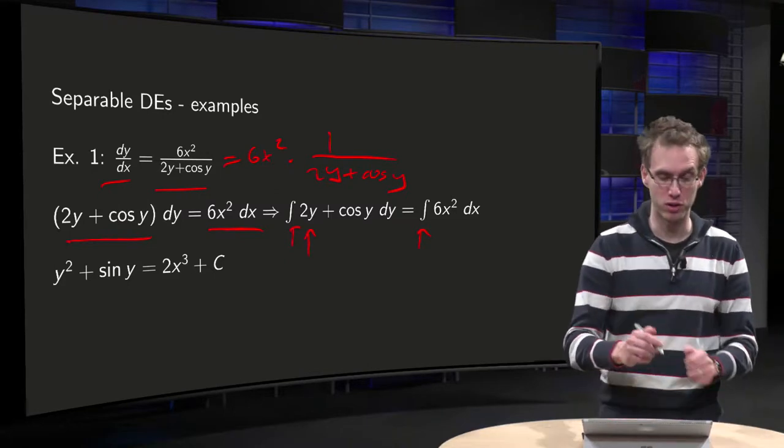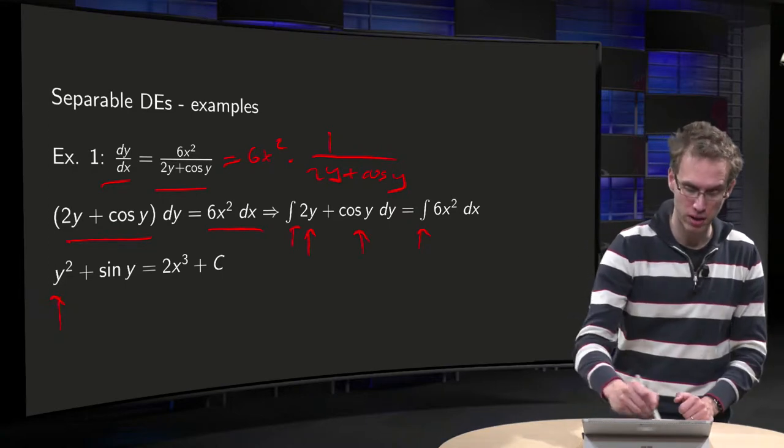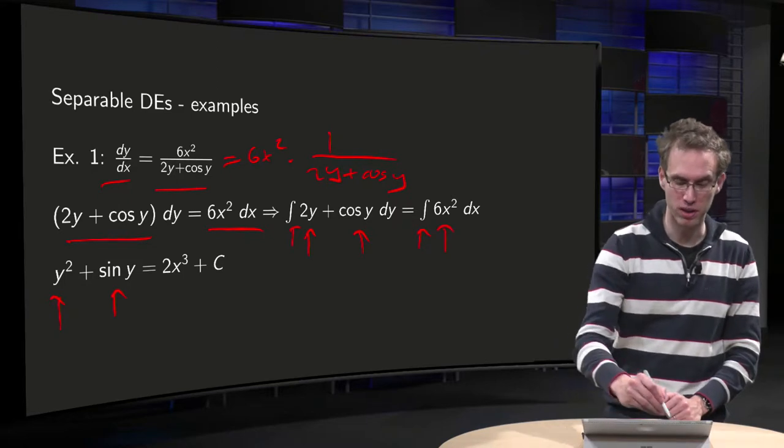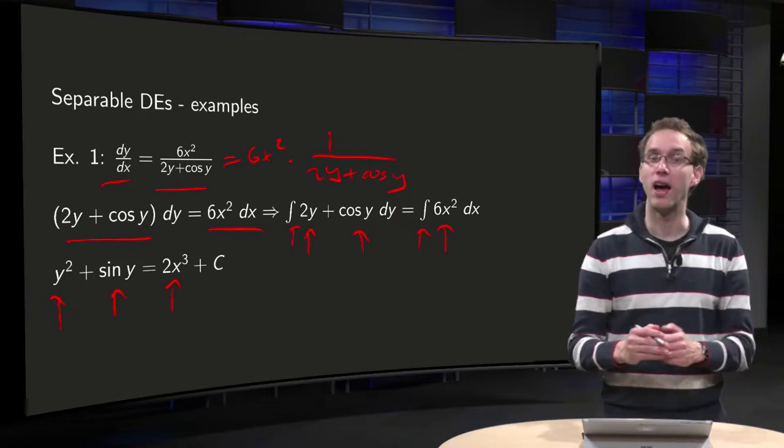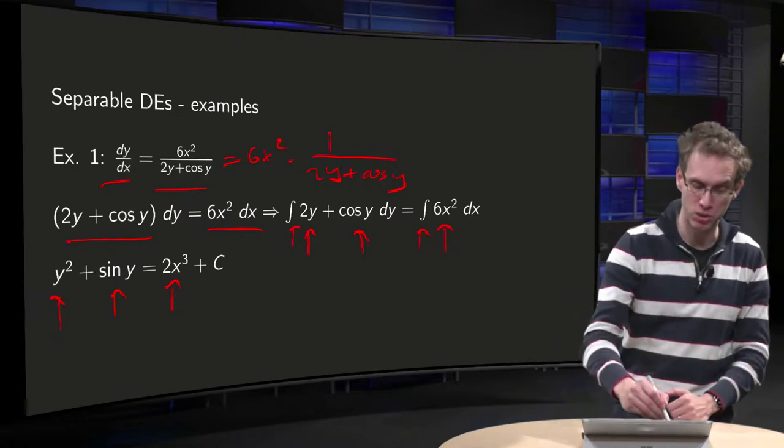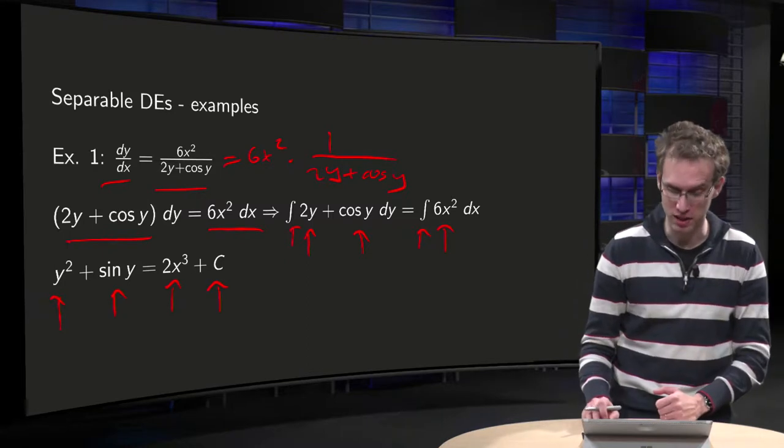Antiderivative of 2y equals y squared. Antiderivative of cosine y equals sine y. And on the right hand side, antiderivative of 6x squared equals 2x cubed. And as we explained earlier, you need only one integration constant, so we usually put that on the right hand side.